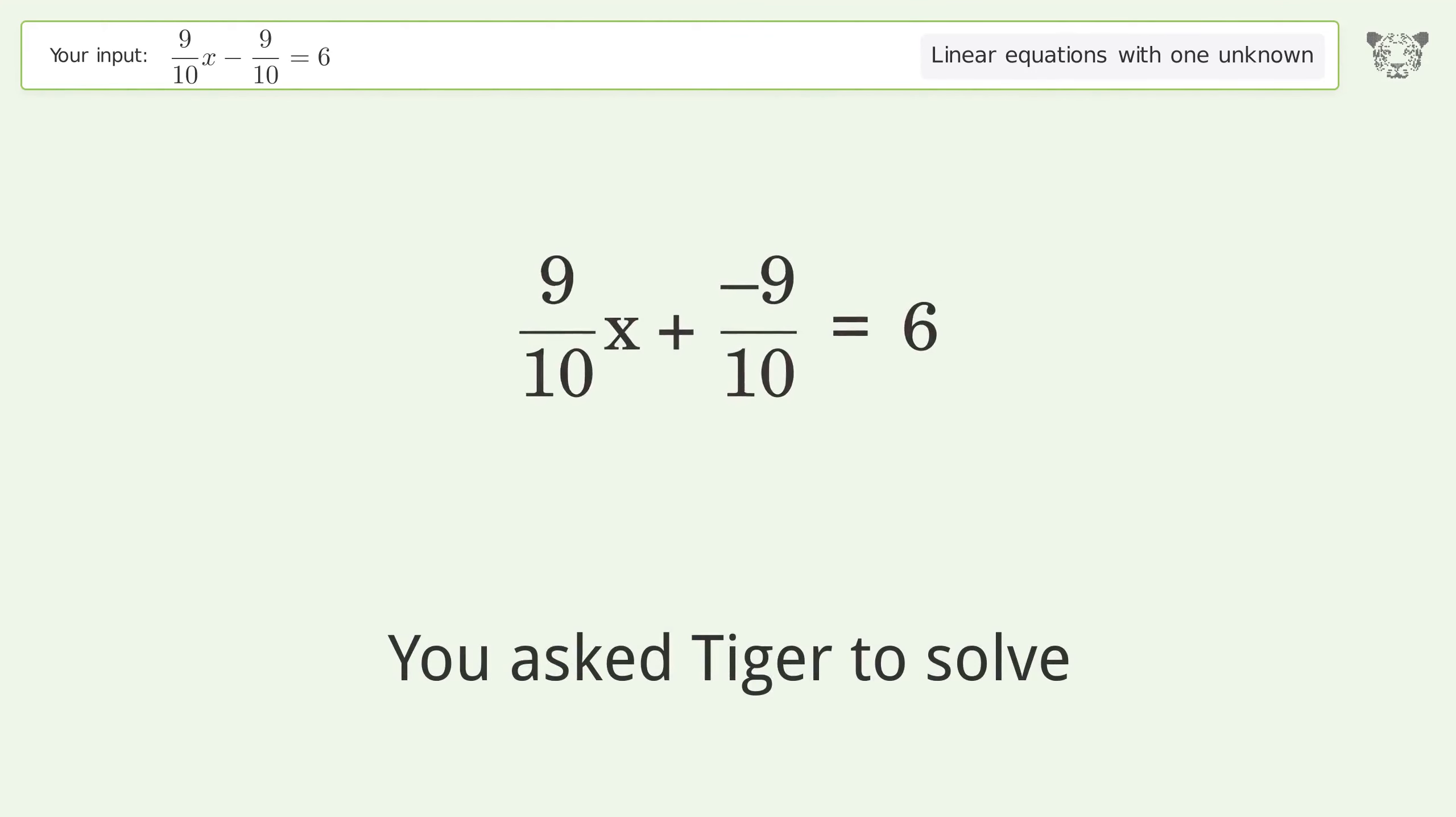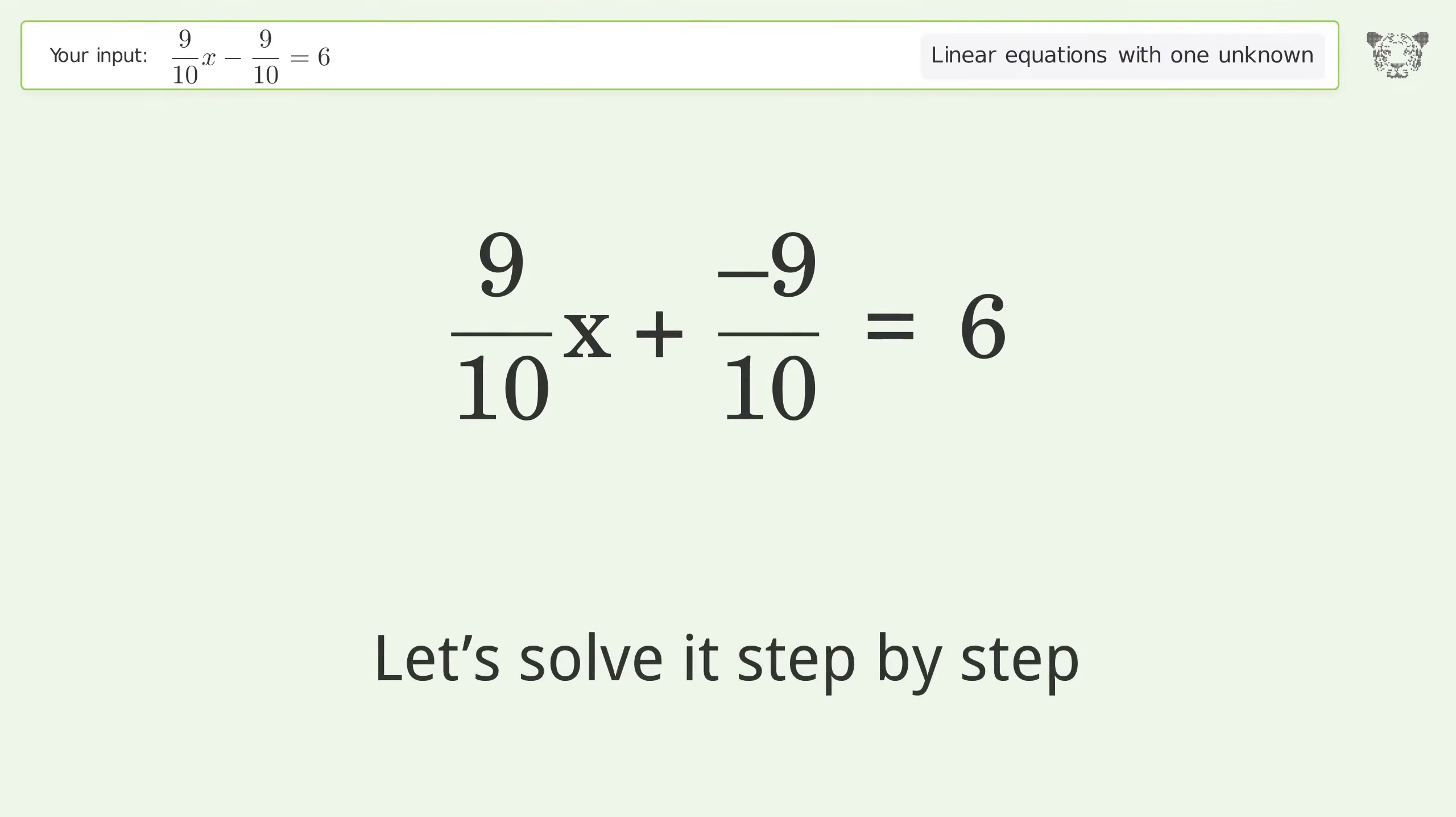You asked Tiger to solve this, which deals with linear equations with one unknown. The final result is x equals 23 over 3. Let's solve it step by step.